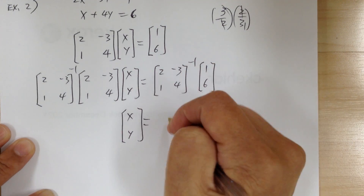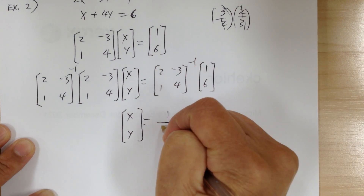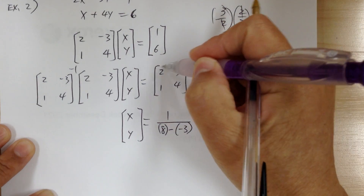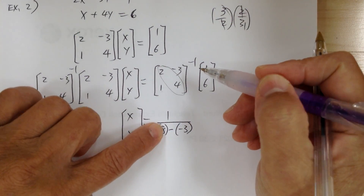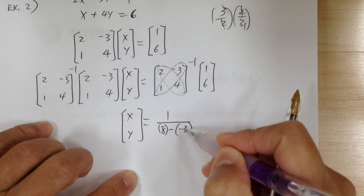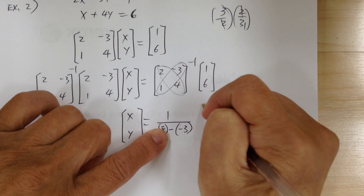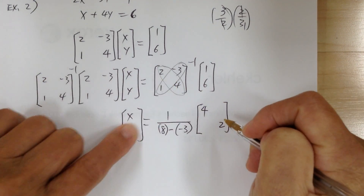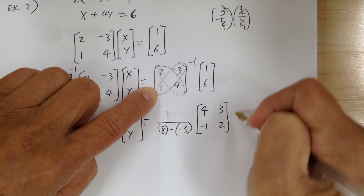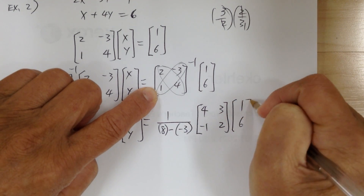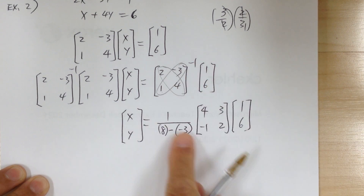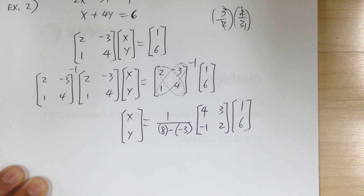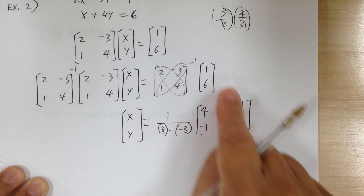The inverse of the coefficient matrix equals 1 over the determinant. The determinant is 2 times 4 minus 1 times negative 3, which is 8 minus negative 3 equals 11. Switch the positive diagonal: 2 and 4 become 4 and 2. Negate the negative diagonal: negative 3 and 1 become 3 and negative 1. The left-hand side cancels out, so you only need to work out the right-hand side.